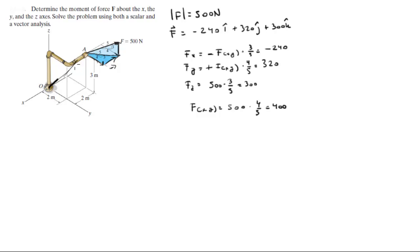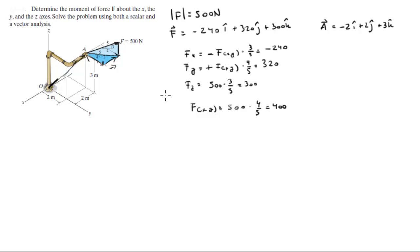Now we need the position vector indicating where the force is applied. Vector OA equals vector A because O is at the origin, and it's given by -2i + 2j + 3k. Now that we have our force vector and position vector, we're going to do the scalar analysis.